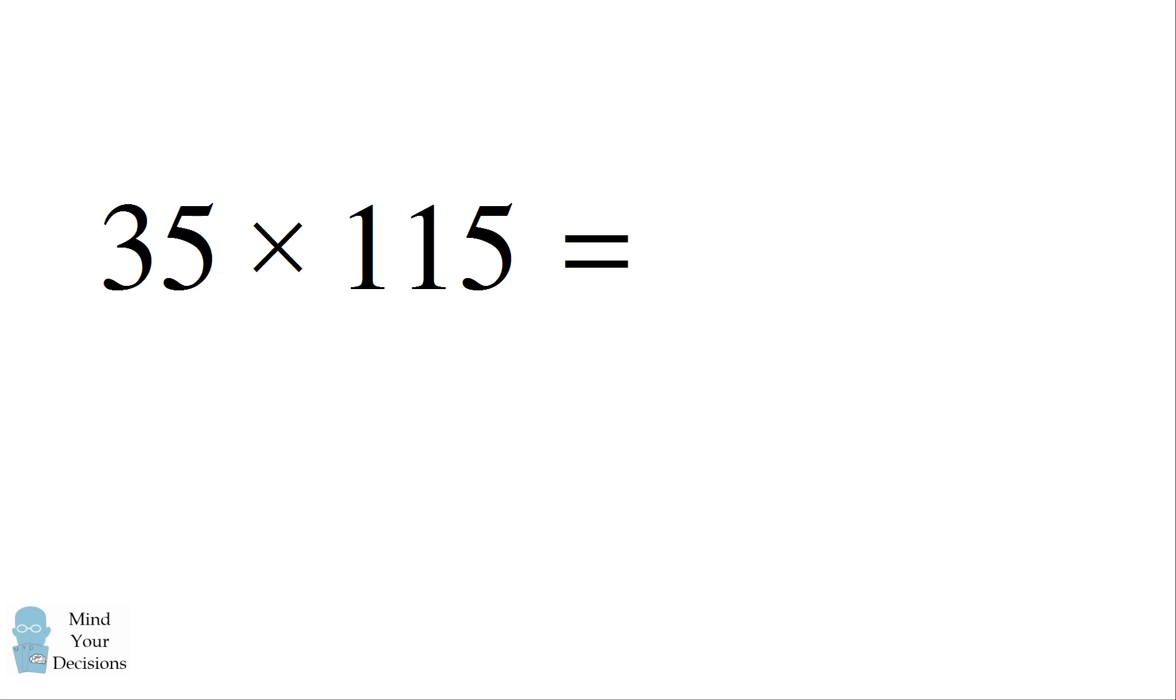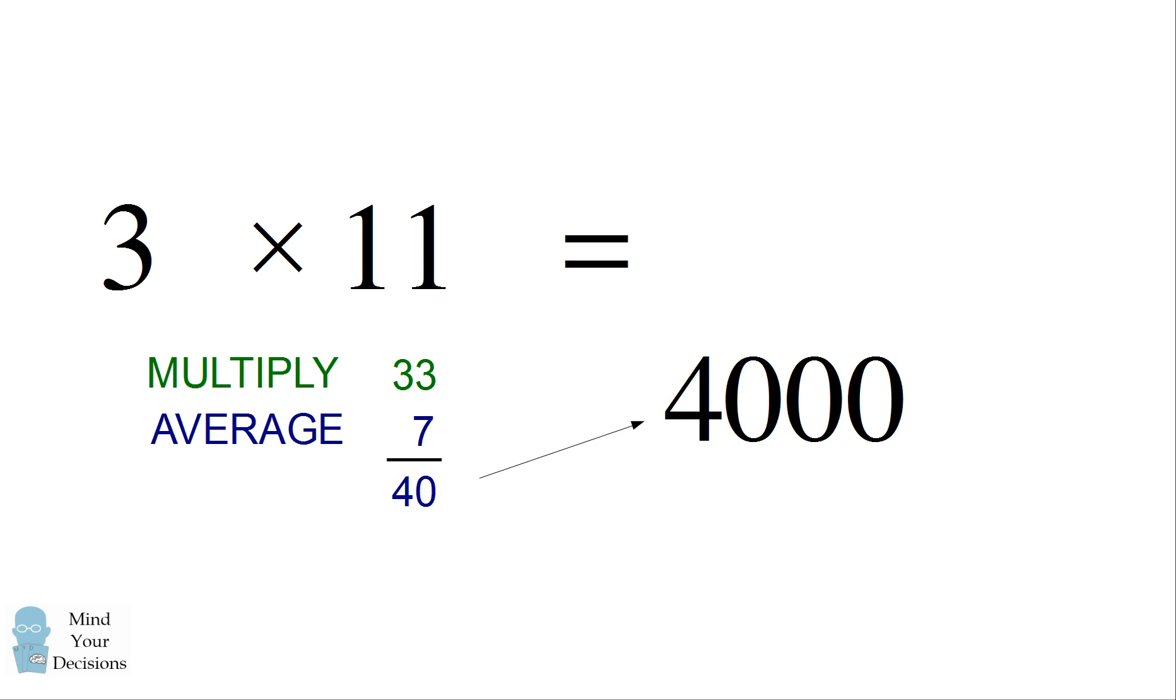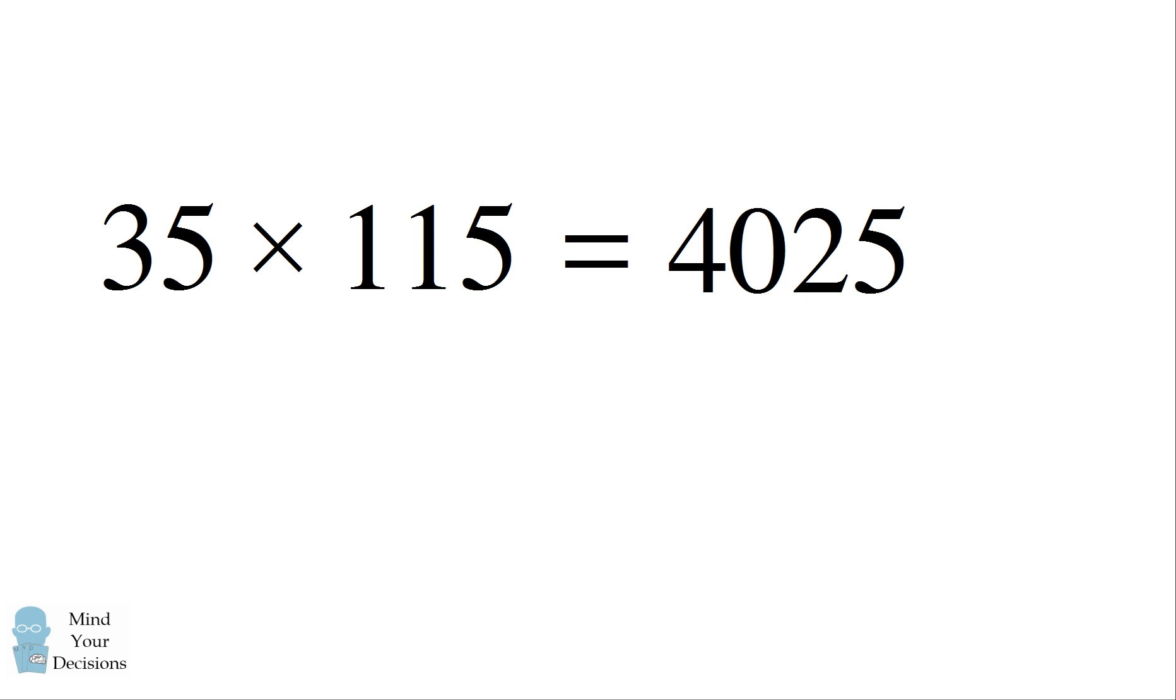You can also do this for numbers which have more than two digits. Let's say you want to do 35 by 115. Both of these numbers end in the digit 5. So we cover up the 5, and we only need to do the calculation for the leading digits. The product of 3 and 11 is 33. The average of 3 and 11 is 7. Adding these together we get 40. We then multiply by a hundred. And finally we add 25. This gets a result of 4025. And that's the answer of 35 times 115.